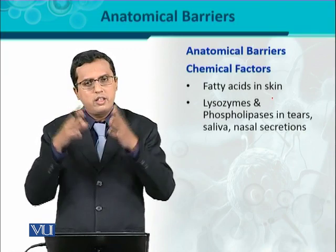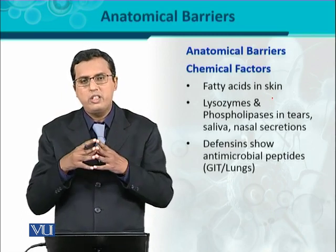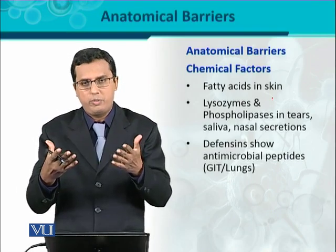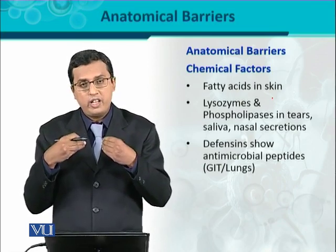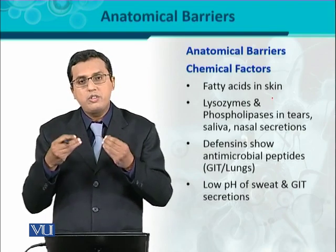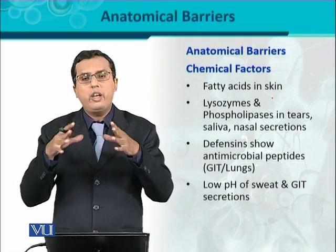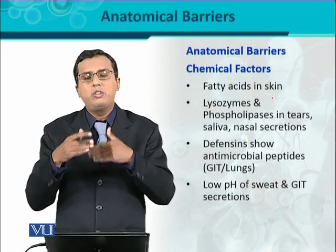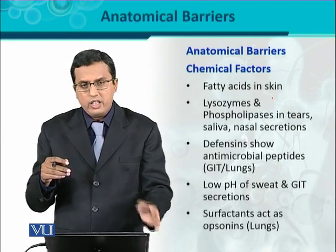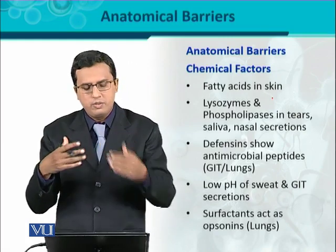There are also certain proteins called defensins — antimicrobial proteins. The name 'defensin' indicates defense; these proteins provide defense. They are present in the GIT and lungs and have antimicrobial properties. Similarly, the low pH of sweat and the GIT — the stomach has a very low pH — whenever an infectious agent tries to enter the GIT, the low pH restricts its growth and flourishing, causing it to be killed. Another important compound is surfactant — a surface-tension-lowering substance that acts like a detergent, present in the lungs, and removes organisms.